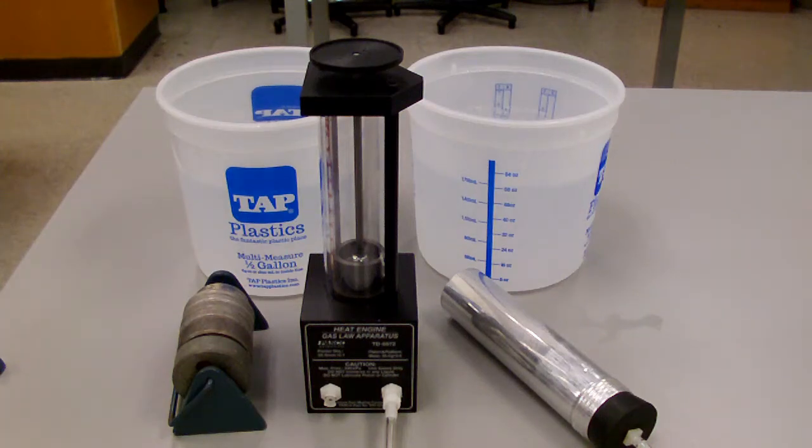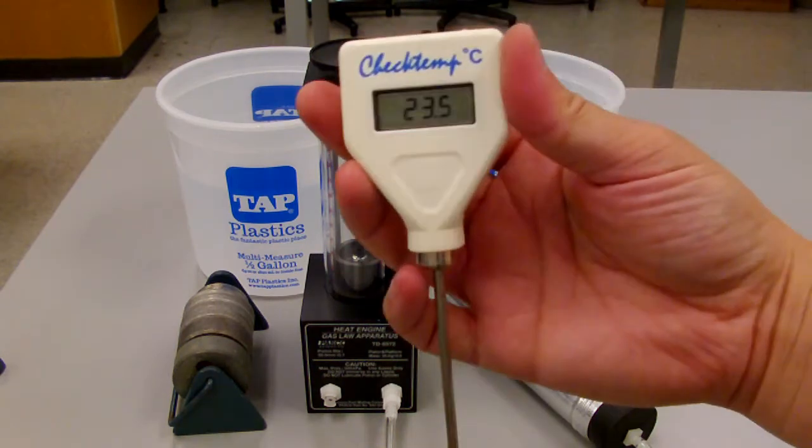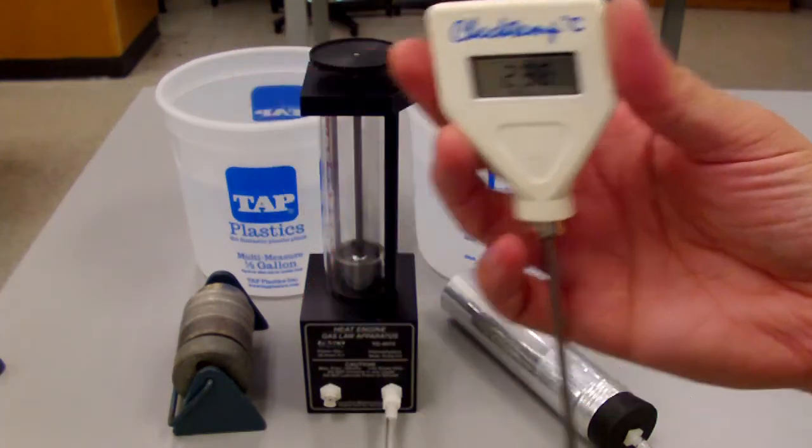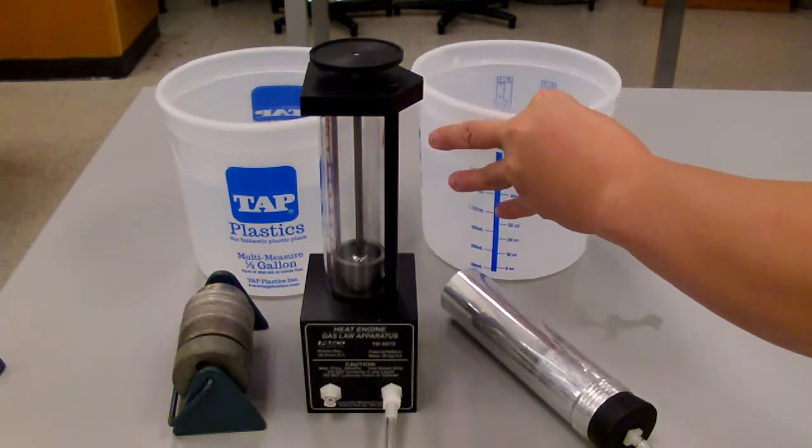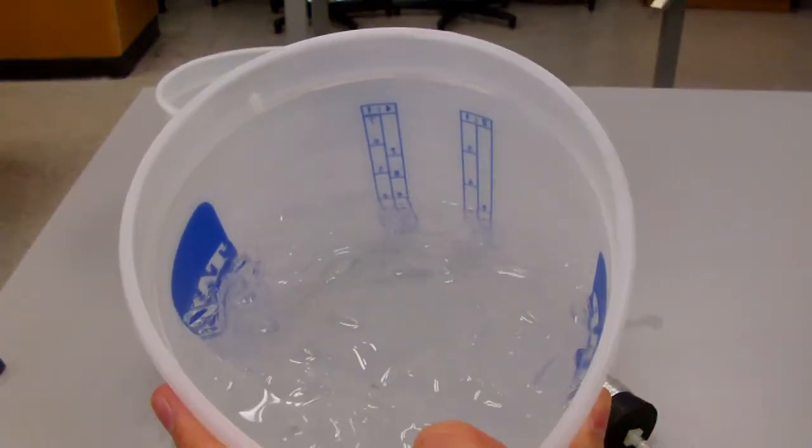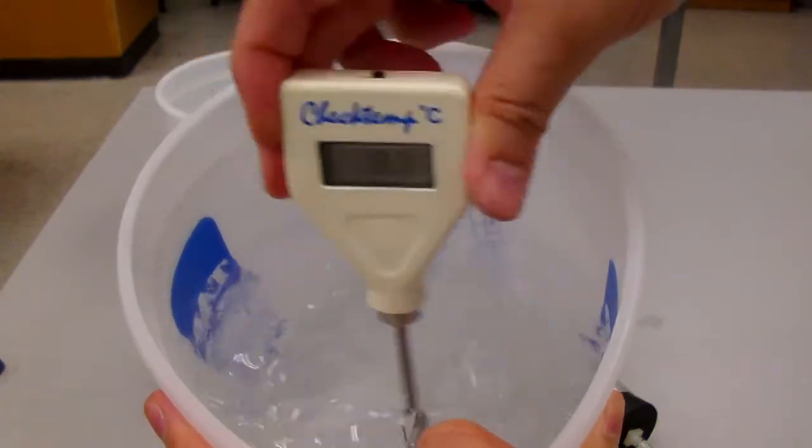This is a sample demonstration of a heat engine apparatus. First, let me demonstrate the thermal reservoirs using this thermometer. We have a cold reservoir containing ice water, and you can see that it's cold.